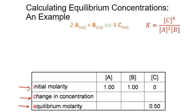We have columns for each of our aqueous reactants and products A, B, and C. We filled in the initial concentrations we were given, or that we measured, in the top row, and the one equilibrium concentration that we know for compound C in the bottom row.